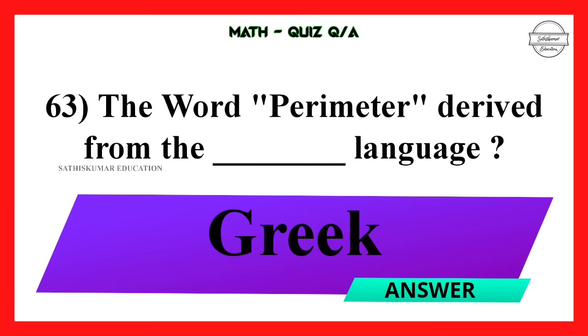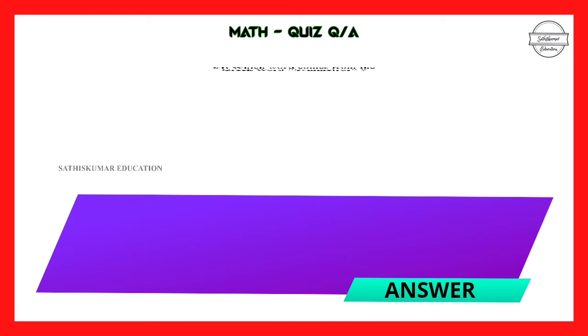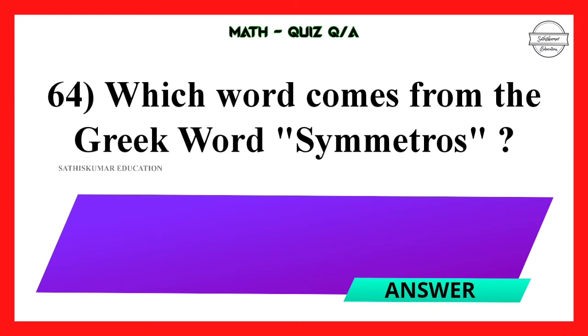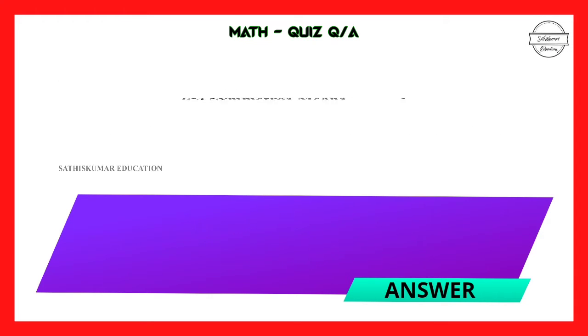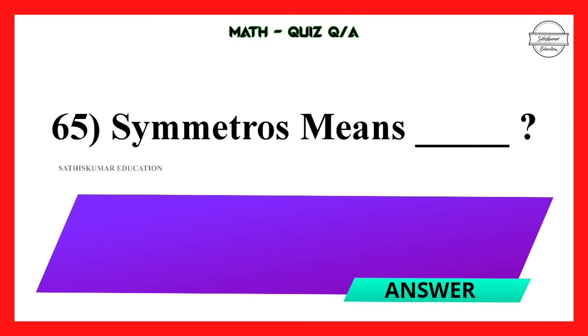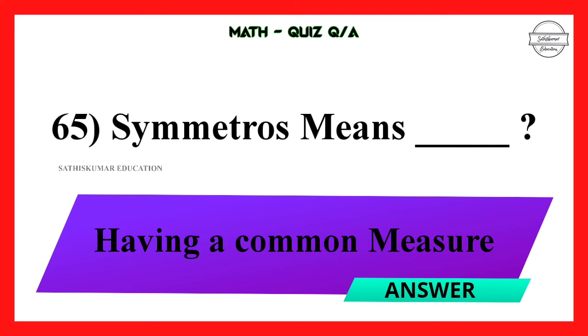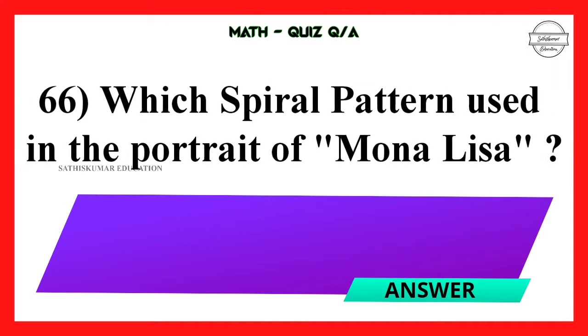Question number 64: Which word comes from the Greek word symmetros? Symmetry. Question number 65: Symmetros means having a common measure. Question number 66: